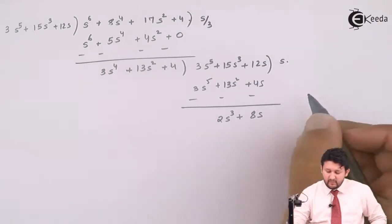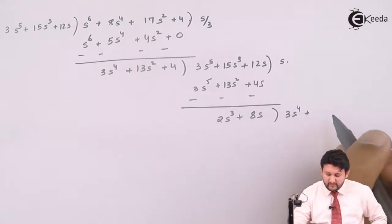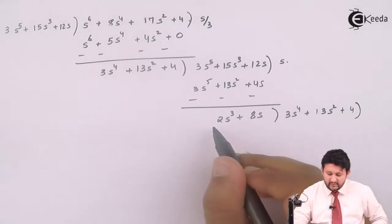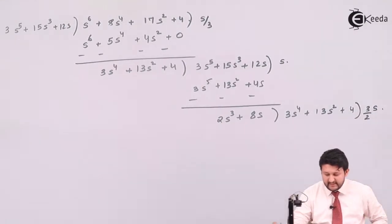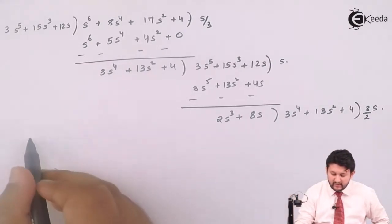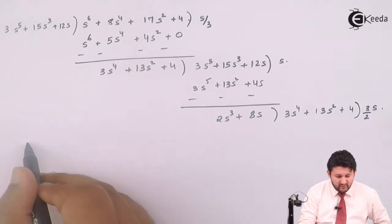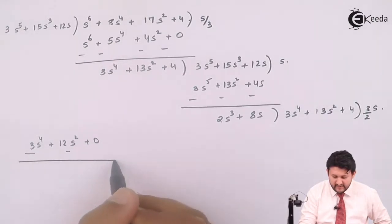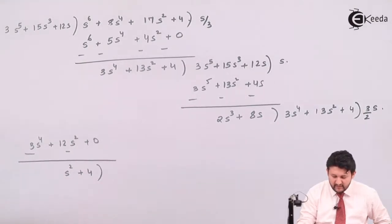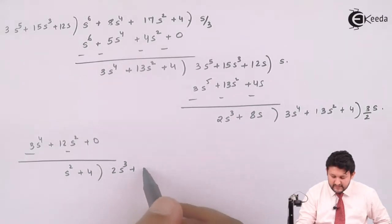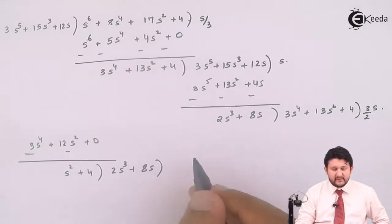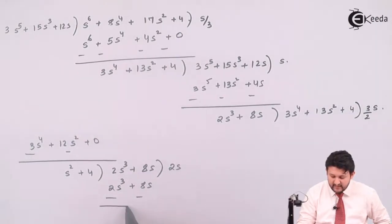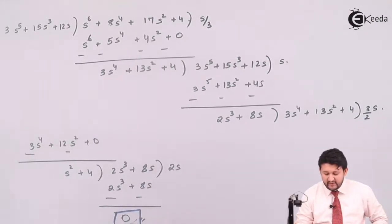Again, it is a continual division. Go further. The term which you get is 3s⁴ + 13s² + 4. The highest term should be divided by the highest term. The term I get is 3/2 s, which should be multiplied with both terms. The value obtained is 3s⁴ + 12s² + 0. Change the sign — I get s² + 4. The division shifts to 2s² + 8s. Dividing gives 2s; multiply 2s with both terms: 2s³ + 8s. Change the sign — I get a value of 0.